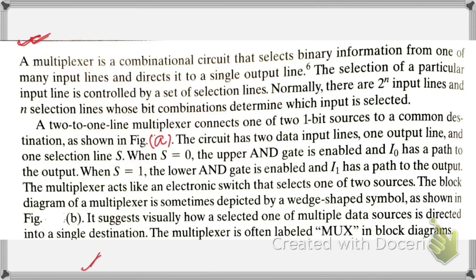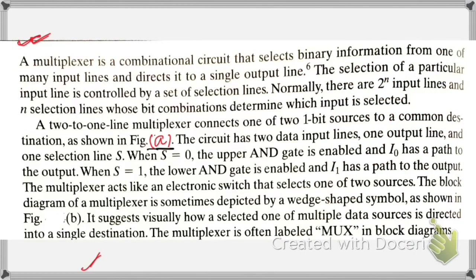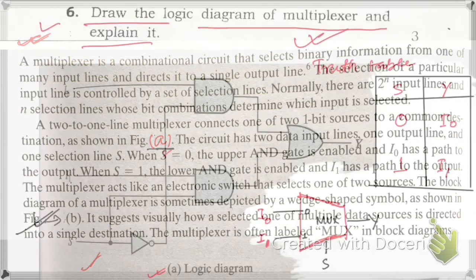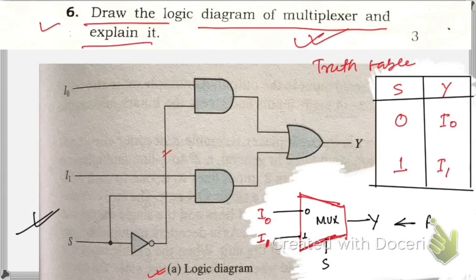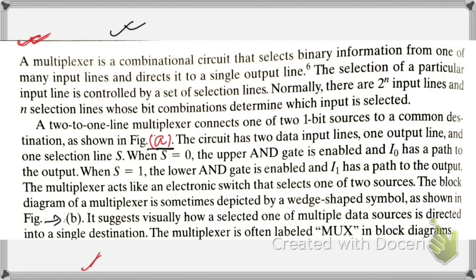Figure A is the logic diagram of the multiplexer and Figure B is the block diagram. Here is the block diagram — this is Figure B. This is the block diagram for the multiplexer. You may take a screenshot or note it down. Now let's go to the next question.